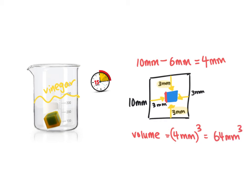That's 64 millimeters cubed. I just found the volume of this blue cube. But what I want is the volume of the part of the cell that the vinegar actually diffused through. So I want this outside part. So that's 1,000 minus 64. That gives me 936 millimeters cubed.